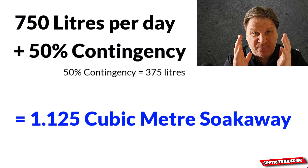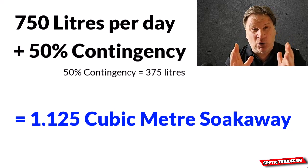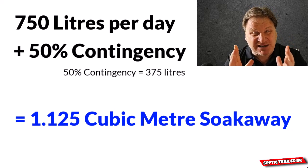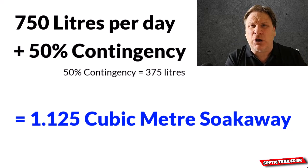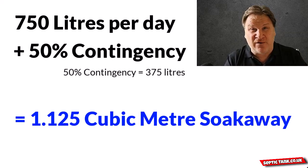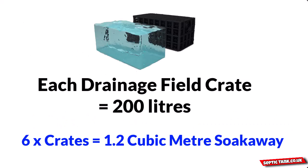So the minimum footprint or cavity of your septic tank soak away in this instance would be 1.125 cubic metres. As each drainage field crate is 200 litres, six drainage field crates would give you a 1.2 cubic metre soak away.